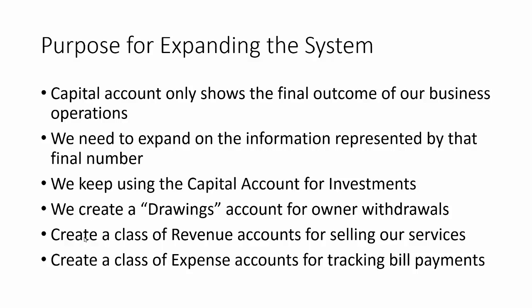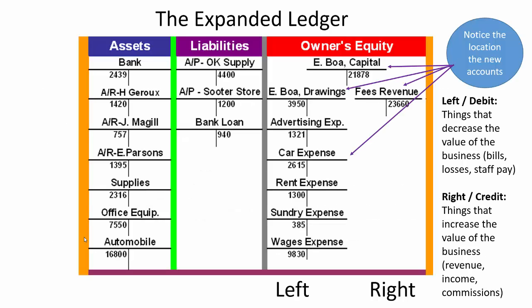We keep using the capital account for investments by the owner. We have the drawings account for owner withdrawals. We have a class of revenue accounts representing any time we bring money into the business. And then expense accounts for all our bill payments and money we pay to people who have earned it. This is what it looks like, and this is a really important graphic to process.